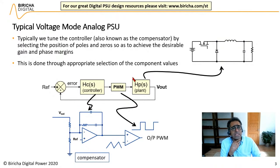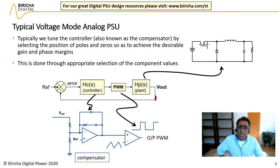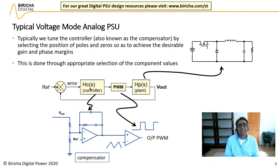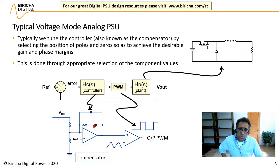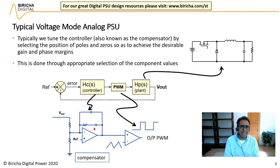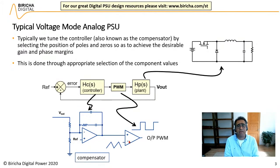We start with an analog power supply. In the analog power supply, everything is designed in continuous time. You get your power supply — the power stage — and your output voltage, which you divide down with a potential divider going into an op-amp, which is your compensator or controller. It is typically represented by a transfer function. The op-amp has capacitors and resistors that shape the frequency response to meet stability criteria. The output goes to the PWM, which in an analog power supply is generated using a sawtooth waveform and a comparator. The width changes depending on your error, and it drives the FET, giving you a closed-loop system.